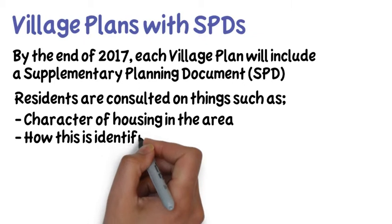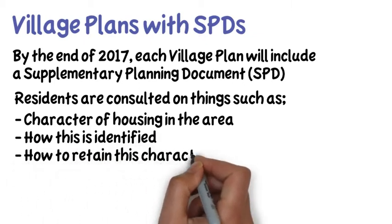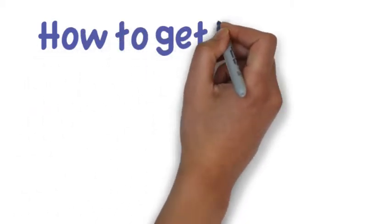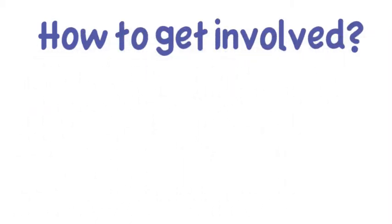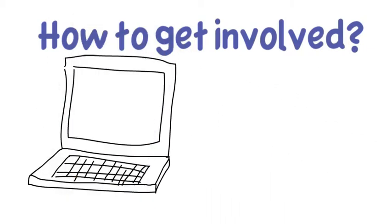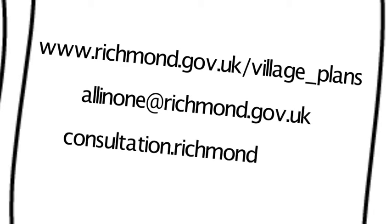Local people are invited to take part in local walkabout tours, where they can show the council exactly what it is that they cherish or dislike. At the heart of the process is a determination that local people are involved in the discussions about their village plan. You can get involved by finding out a little more online, taking part in a consultation, attending an event, or inviting a community links officer to your group meeting.